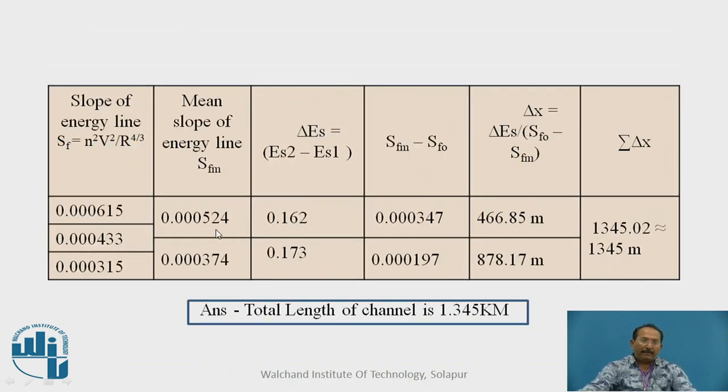Then slope of energy line. Now this particular column, just concentrate on this, how it comes, Sf is equal to N square V square R raised to 4 by 3. Just now, we have studied the Manning's formula, V is equal to 1 upon N, R raised to 2 third and S raised to half. From this formula, this Sf is equal to N square V square upon R raised 4 by 3. This comes from Manning's formula.